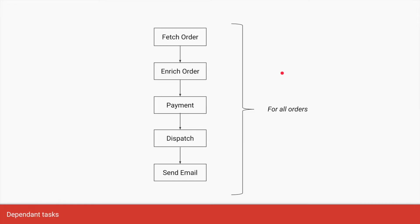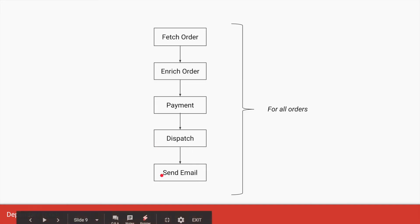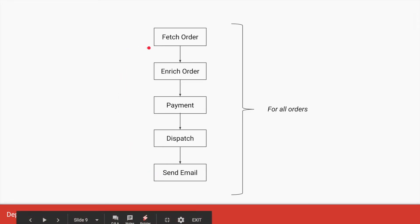Let's take a more practical example. Say we have a set of code divided into multiple methods, each responsible for a particular task: fetching an order, enriching that order with more details, making payment for the order, dispatching the order, and sending a confirmation email. So for an order flow, we have five tasks: Fetch, Enrich, Payment, Dispatch, and Email.